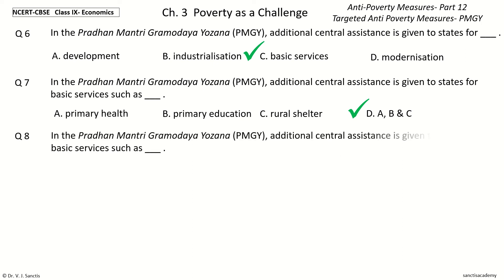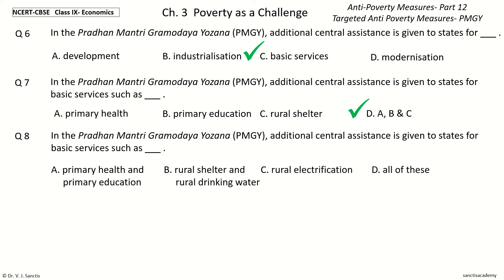Question 8: The Basic Services under PMGY include blank. The options are: Primary Health and Primary Education; Rural Shelter and Rural Drinking Water; Rural Electrification; or All of these. Your time to choose. And the answer is All of these — Primary Health, Primary Education, Rural Shelter, Rural Drinking Water, and Rural Electrification.